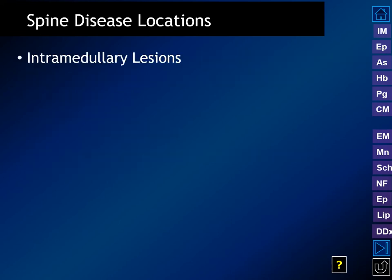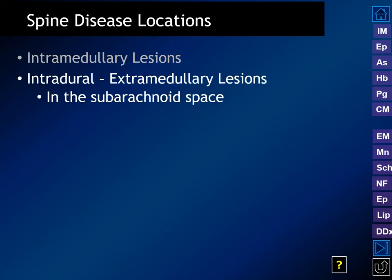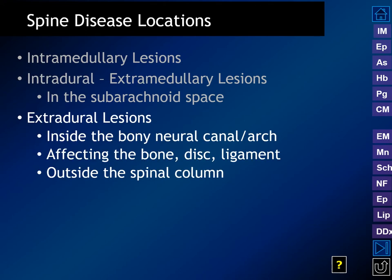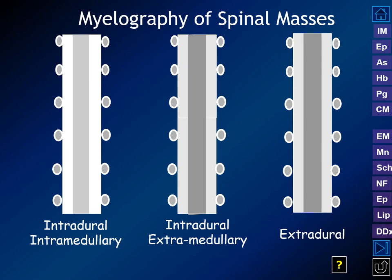When we classify spinal cord lesions, we talk about intramedullary lesions, intradural extramedullary lesions which are in the subarachnoid space, and extradural lesions which are inside the bony neural canal affecting the bone, the disc, or the ligaments, and also those outside of the spinal column itself. This terminology is predicated on all the work from myelography from 40 and 50 years ago.